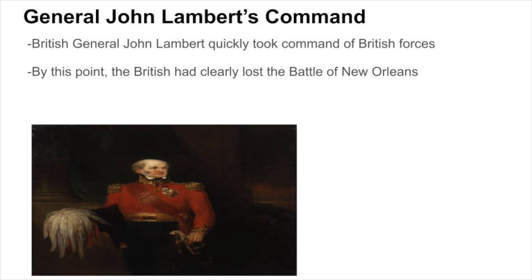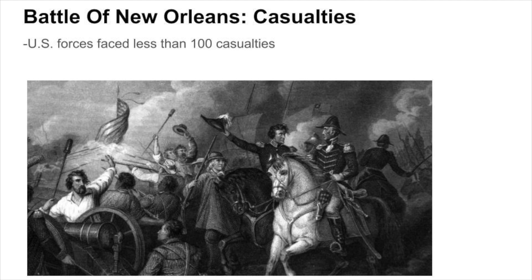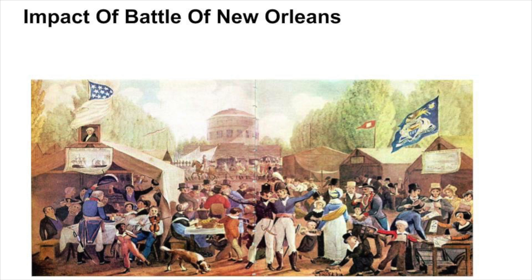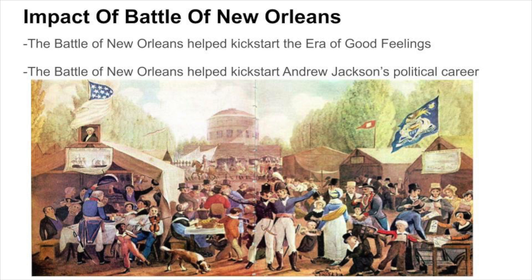General Lambert quickly accepted defeat and withdrew his forces into retreat. U.S. forces remarkably faced less than 100 casualties at the battle, while British forces faced over 2,000 casualties. Although the Treaty of Ghent had already ended the War of 1812, the United States' decisive victory at the Battle of New Orleans had major domestic implications in the years to come. The Battle of New Orleans was a pivotal event that helped kickstart both the Era of Good Feelings and Andrew Jackson's political career that would take him to the U.S. Presidency in 1829.